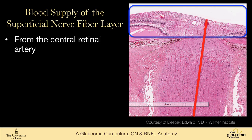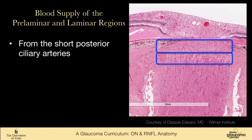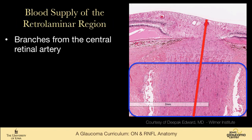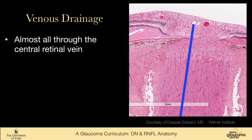Going layer by layer through the blood supply: the visible portion of the optic nerve, the superficial nerve fiber layer, is supplied by the central retinal artery and also from ciliary retinal arteries when they're present, which is not in everyone. The prelaminar and laminar regions are supplied from the short posterior ciliary arteries that enter through the sclera. The retrolaminar region has branches from the central retinal artery but also branches that come in from the pia. Venous drainage is virtually all through the central retinal vein.